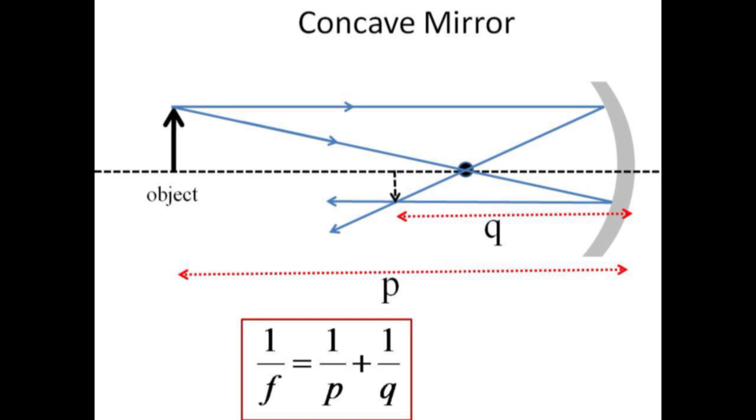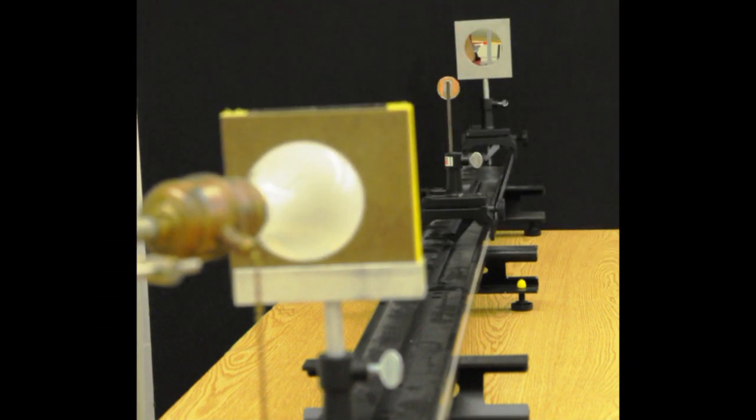The equation for the mirror is identical to the lens equation. Since our mirrors have a fairly long focal length, we need at least 2 meters to work with. Here we joined two optical benches end to end.